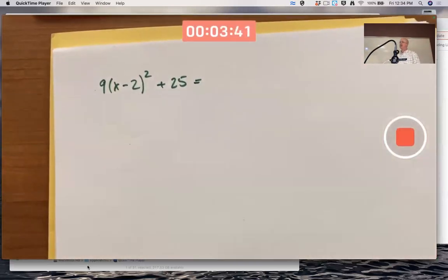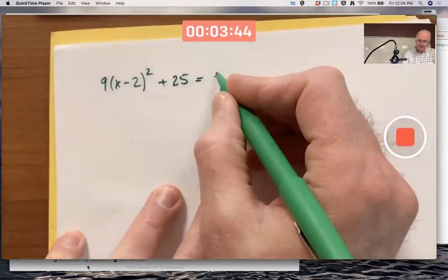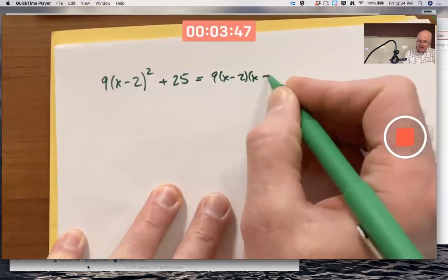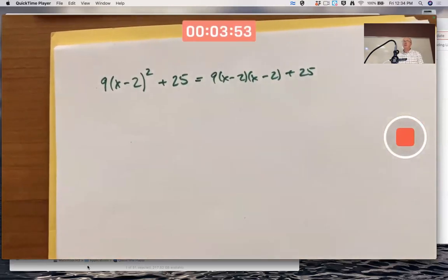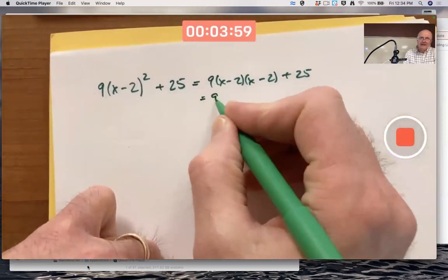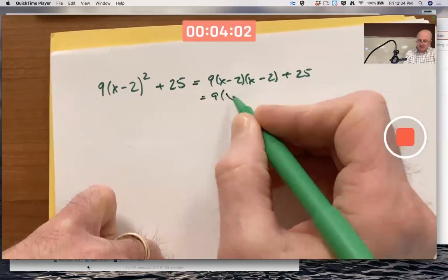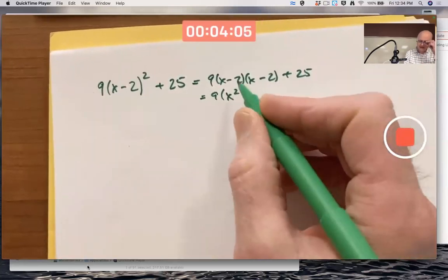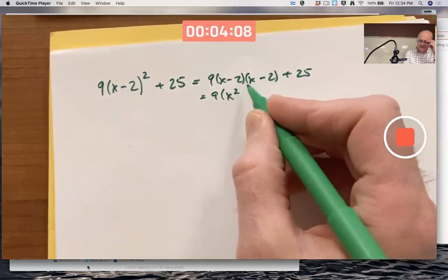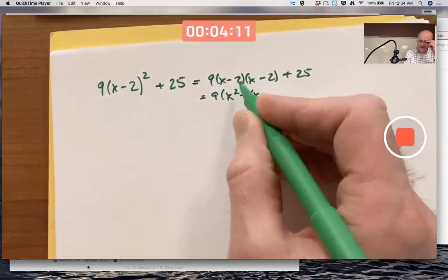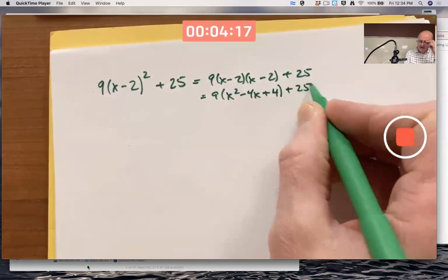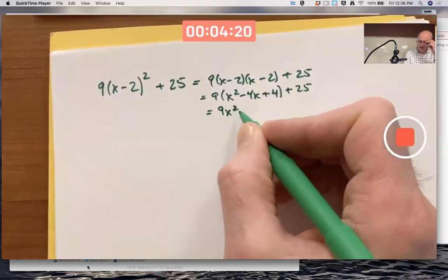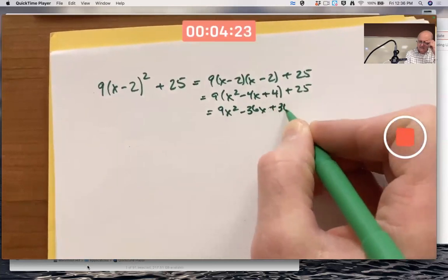If I now expand this, multiply it all out, that'll give me a quadratic. Expand this out, FOIL this, I get x times x is x². Outside times outside is negative 2x. Inside times inside is negative 2x, giving me minus 4x. And then last times last is negative 2 times negative 2 is positive 4.